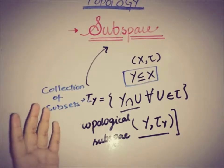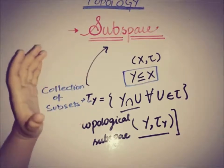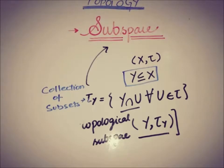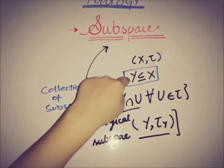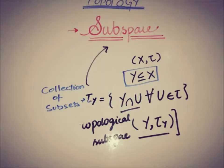Now we have just defined that this is a topological space. In the next video we will prove that tau y is a topological subspace on the set y. We will meet in the next video. Till then take care, goodbye!